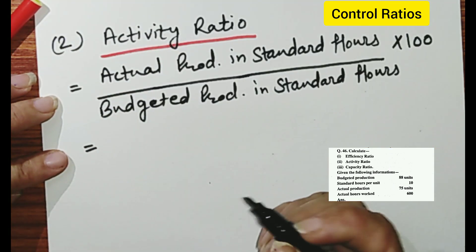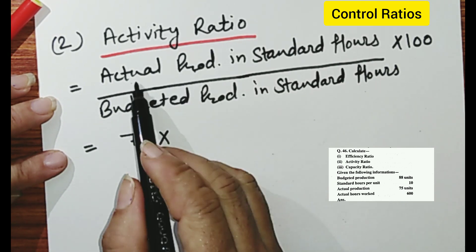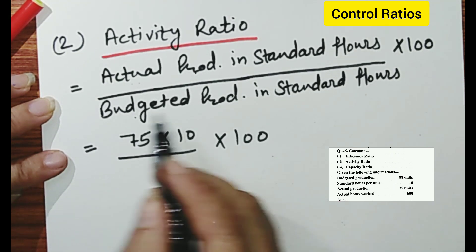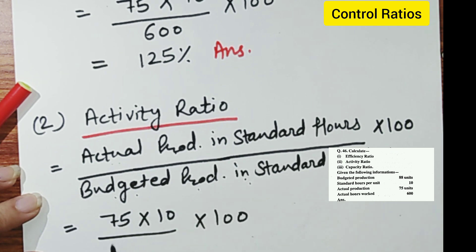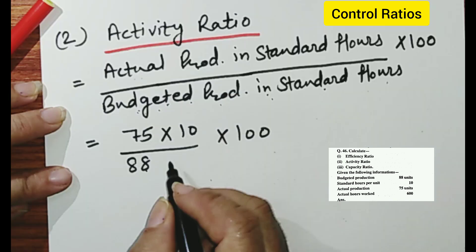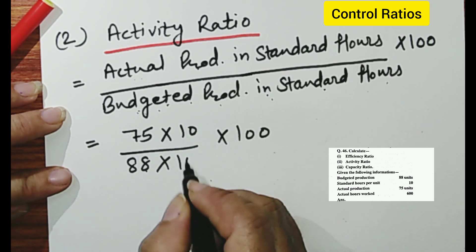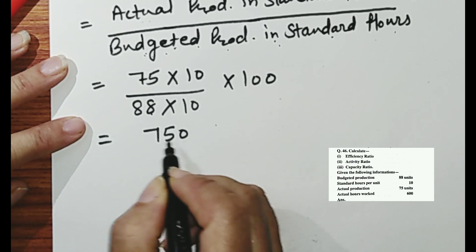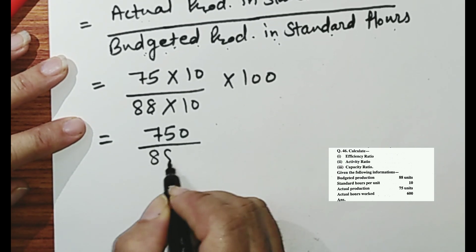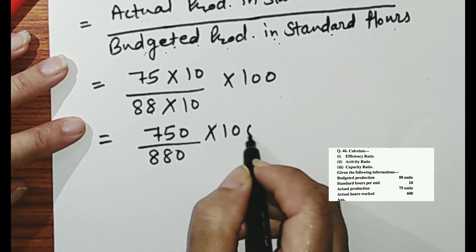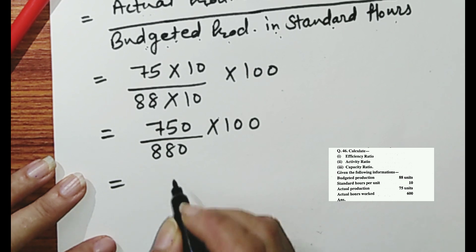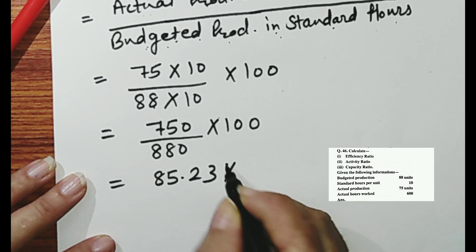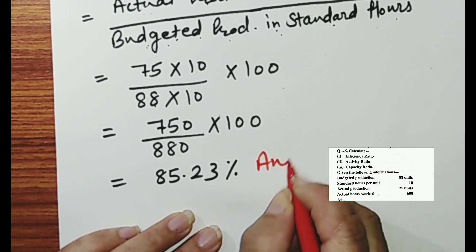Actual production is 75 multiplied by 10 standard hours, upon budgeted production which is 88 multiplied by standard hours 10, multiplied by 100. Solving the answer gives 85.23%, which is our activity ratio.